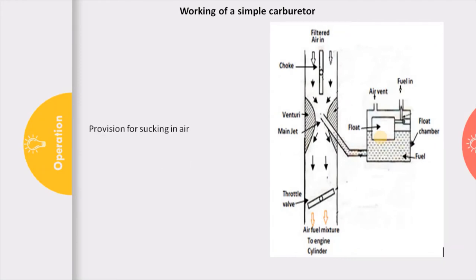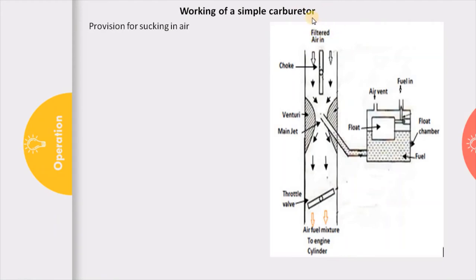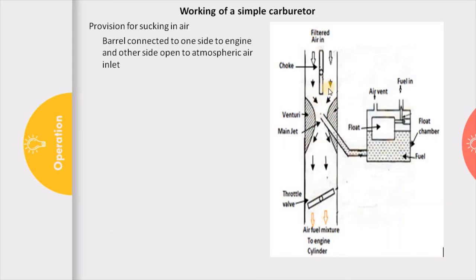Now let us move on to the actual working of a carburetor. We require a provision for bringing in a metered quantity of air. We have provided a barrel connected on one side to the engine cylinder — where vacuum acts — and on the other side to the atmosphere, where filtered air enters. Due to this pressure difference between atmospheric pressure on one side and vacuum on the engine side, air is made to flow through the barrel.